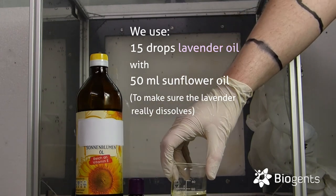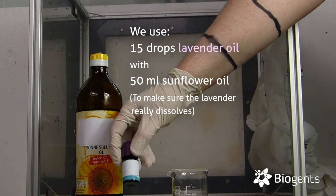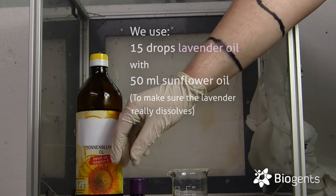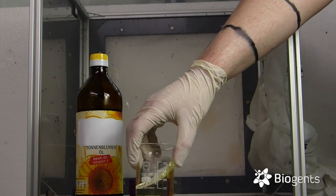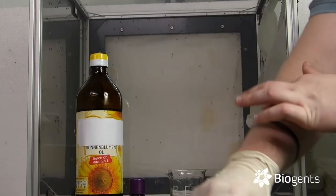We mixed 15 drops of the pure oil inside commercially available sunflower oil. Normally you would mix 10 drops of the oil in about 100 milliliters of water. We just made a higher concentration of it to really show if it works or not.